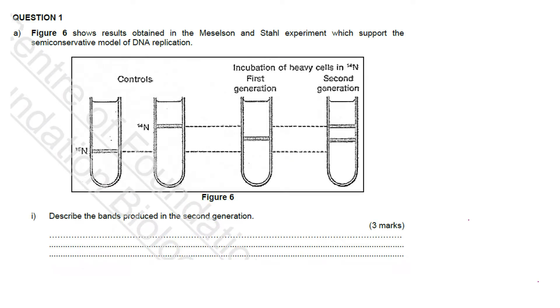Part B on genetic inheritance and genetic control. We are going to discuss the structured question. Question number 1A. Figure 6 shows results obtained in the Meselson and Stahl experiment which support the semi-conservative model of DNA replication.